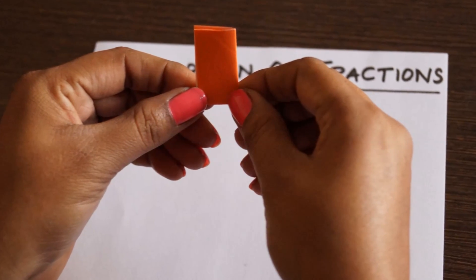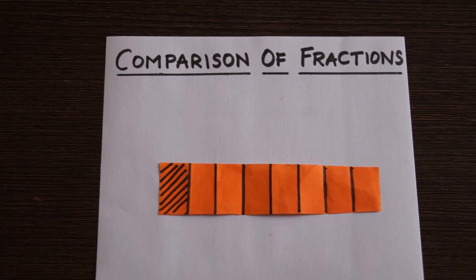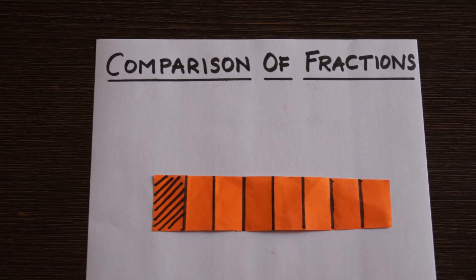Now, take the third strip and divide it into eight equal parts and shade one part.